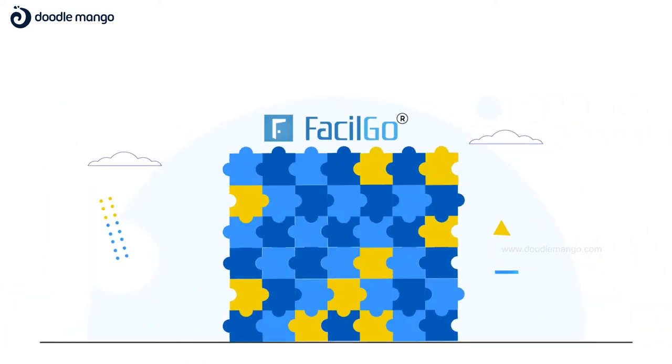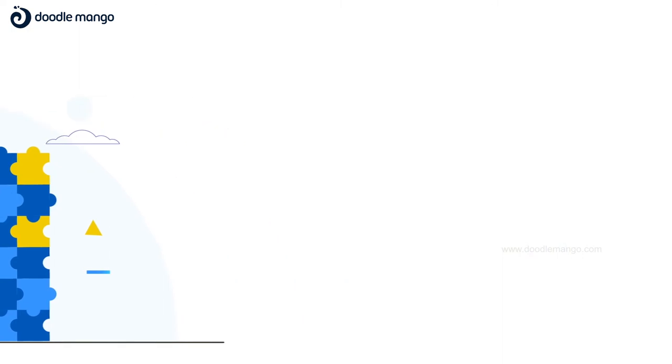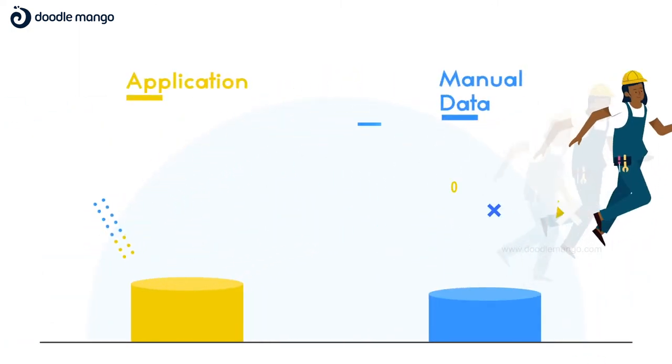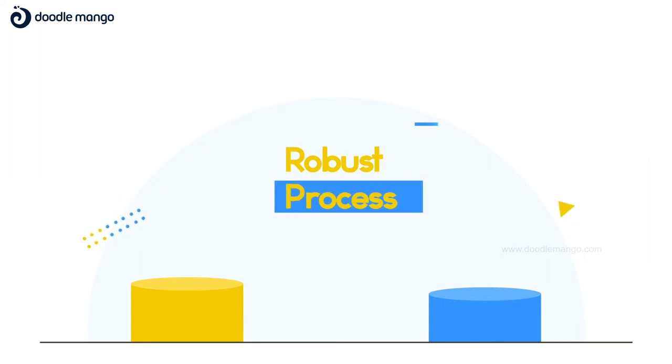Fasilgo is designed to support the entire process, so you can avoid jumping between applications or manually transposing data and execute an efficient, robust process.